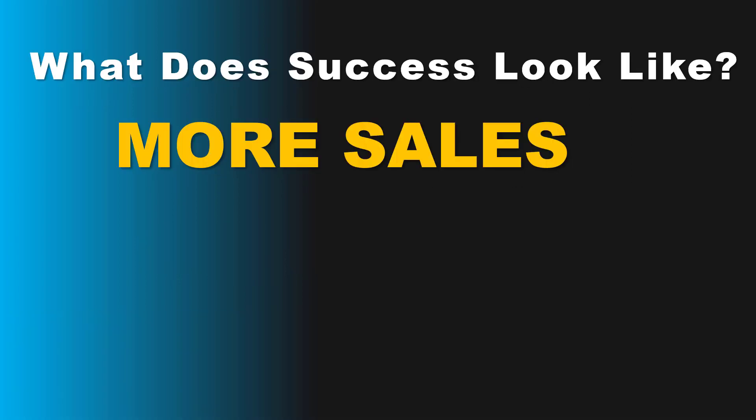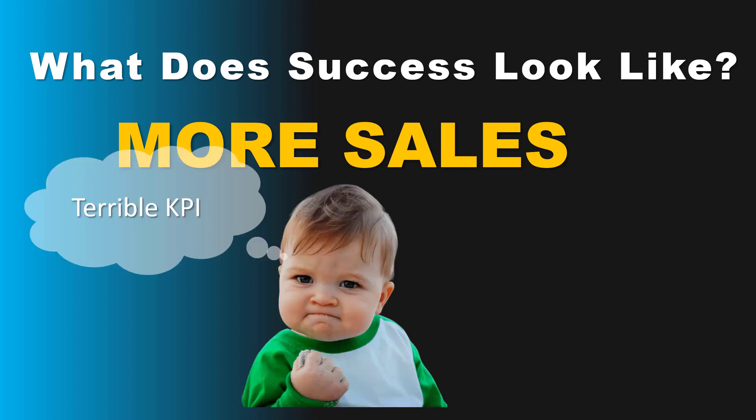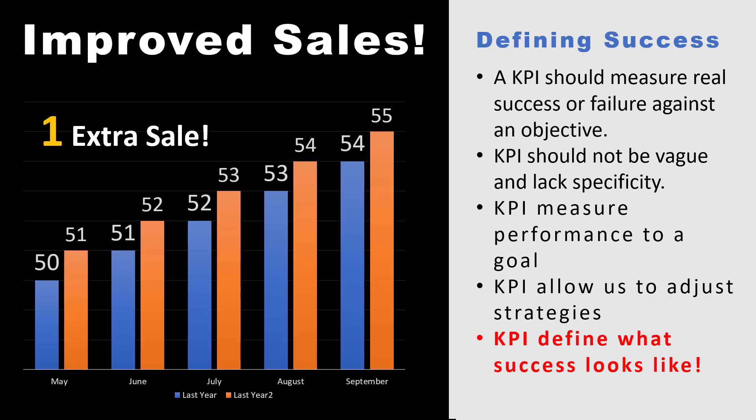Usually when you ask a customer or someone what success looks like, you get a very vague answer. If you're asking a company, maybe they say more sales is going to be a measure of success. But that's a terrible KPI. Looking at the chart, the blue line is last year and the orange line is this year — we had more sales this year, one extra sale per month. Is that success? We don't know because the user has not defined what our objectives are.